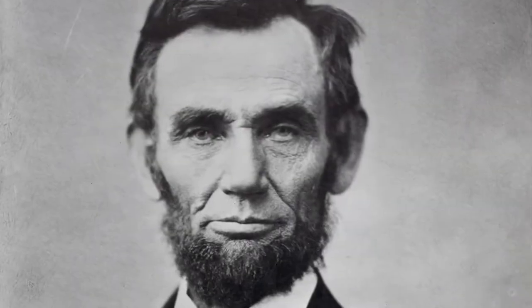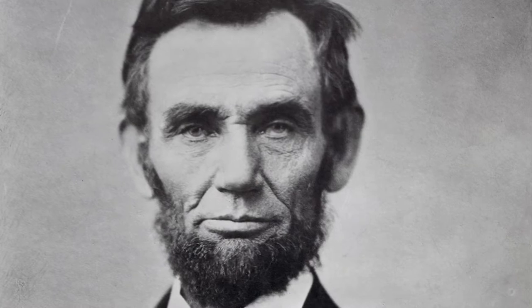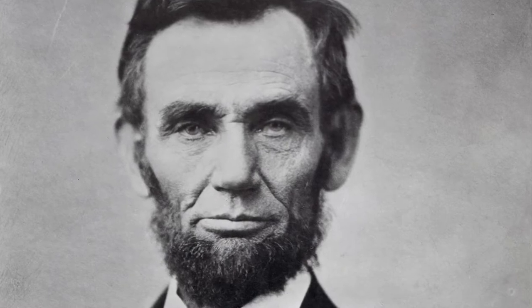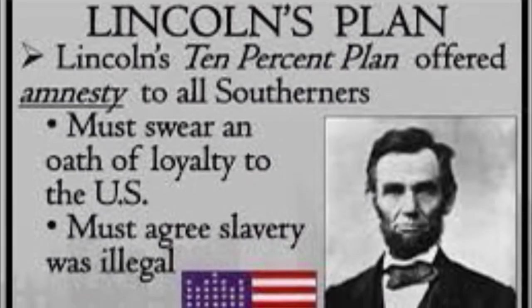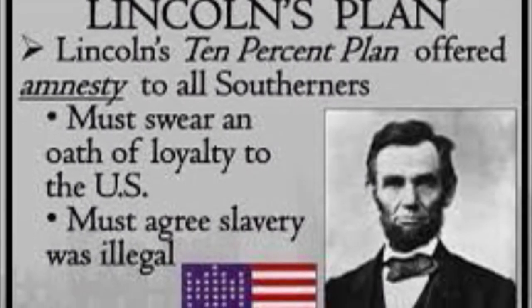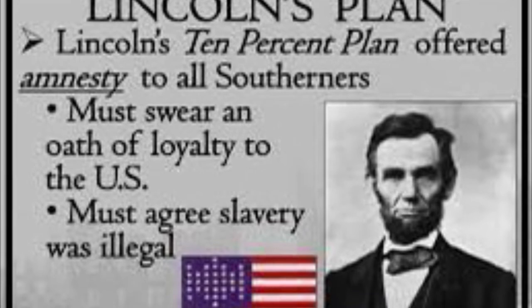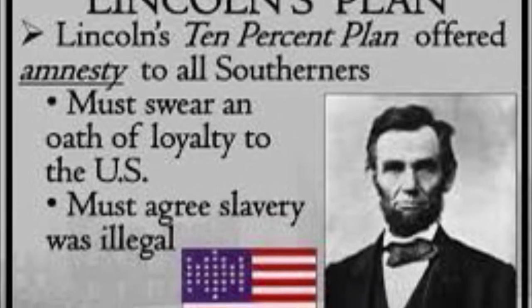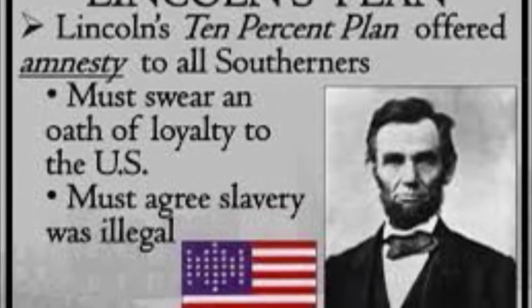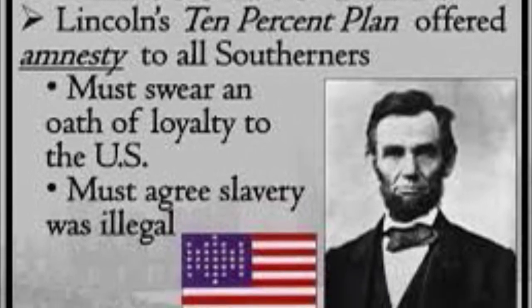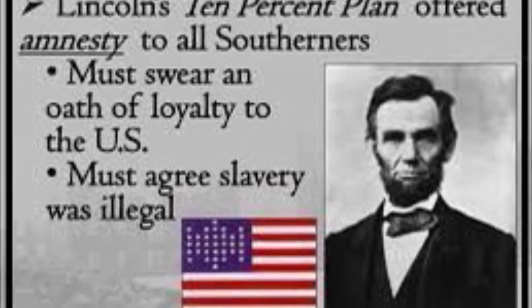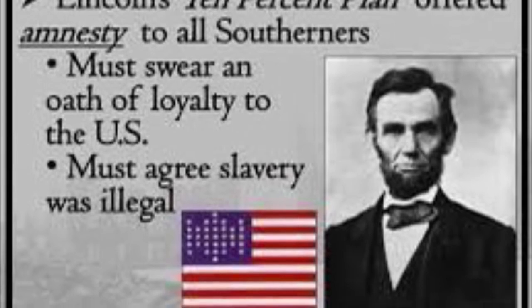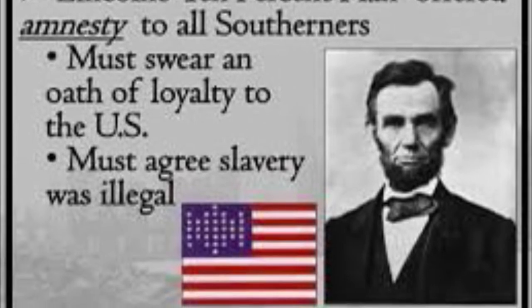While there were many plans and attempts at Reconstruction, America's 16th President Abraham Lincoln proposed the 10% Plan in 1863 — a plan that claimed a Southern state could be readmitted to the Union once 10% of its voters swore an allegiance to the Union.